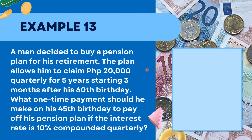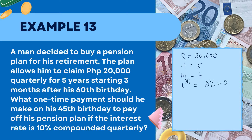Let's identify the given values. The regular amount he will receive after his 60th birthday is P20,000, so R equals 20,000. He will receive this quarterly for 5 years, so M equals 4 since it's 4 times a year. The interest rate is 10% compounded quarterly, which in decimal is 0.10. So J equals the interest rate divided by M, that is 0.10 over 4, which equals 0.025.